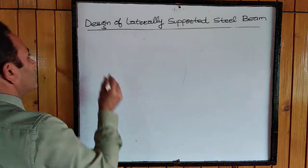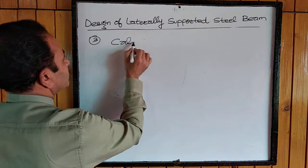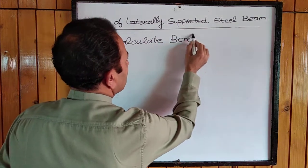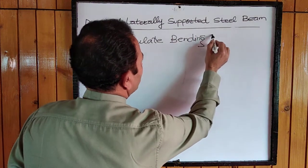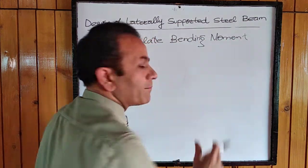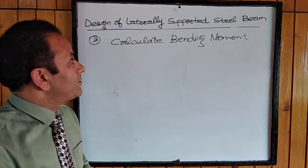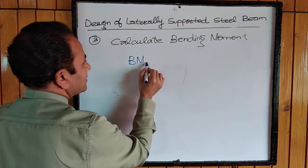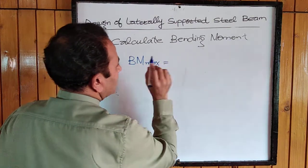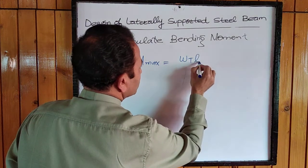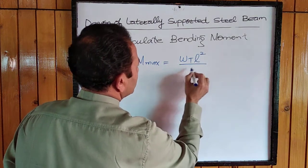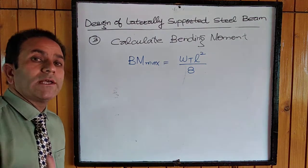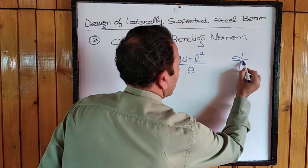After knowing the load, we calculate the bending moment developed due to the loads acting on the beam. The maximum bending moment for a simply supported beam is equal to the total load times effective span squared, divided by 8 — this is the maximum bending moment acting at the center.